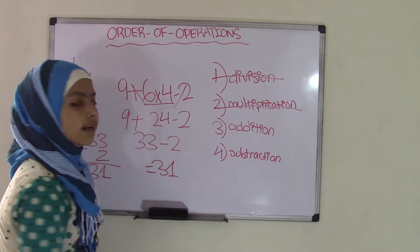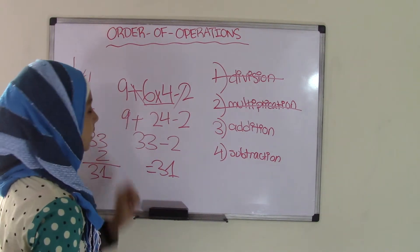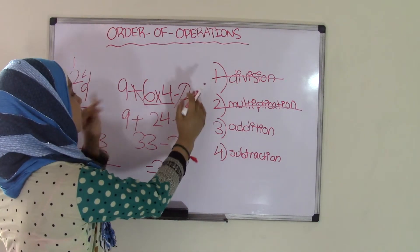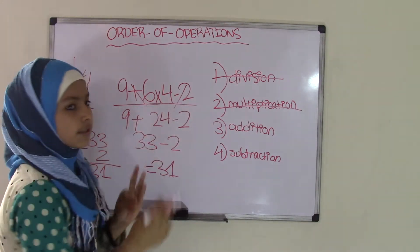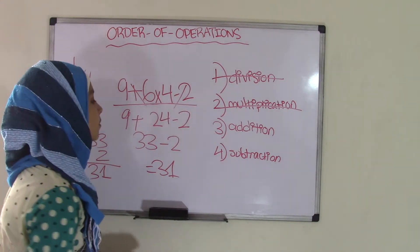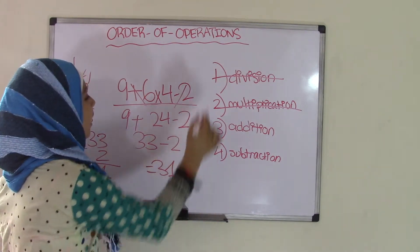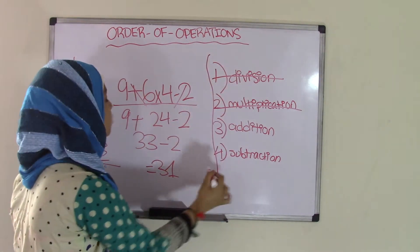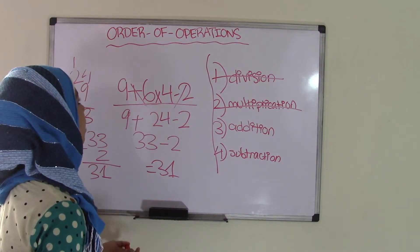And 31 is the solution to 9 plus 6 times 4 minus 2. Now, at the beginning, as you can see, this is a very big expression because it has all of these numbers and signs, and it might be a little confusing. But if you just practice some expressions and just follow these order of operations, it can be really easy.